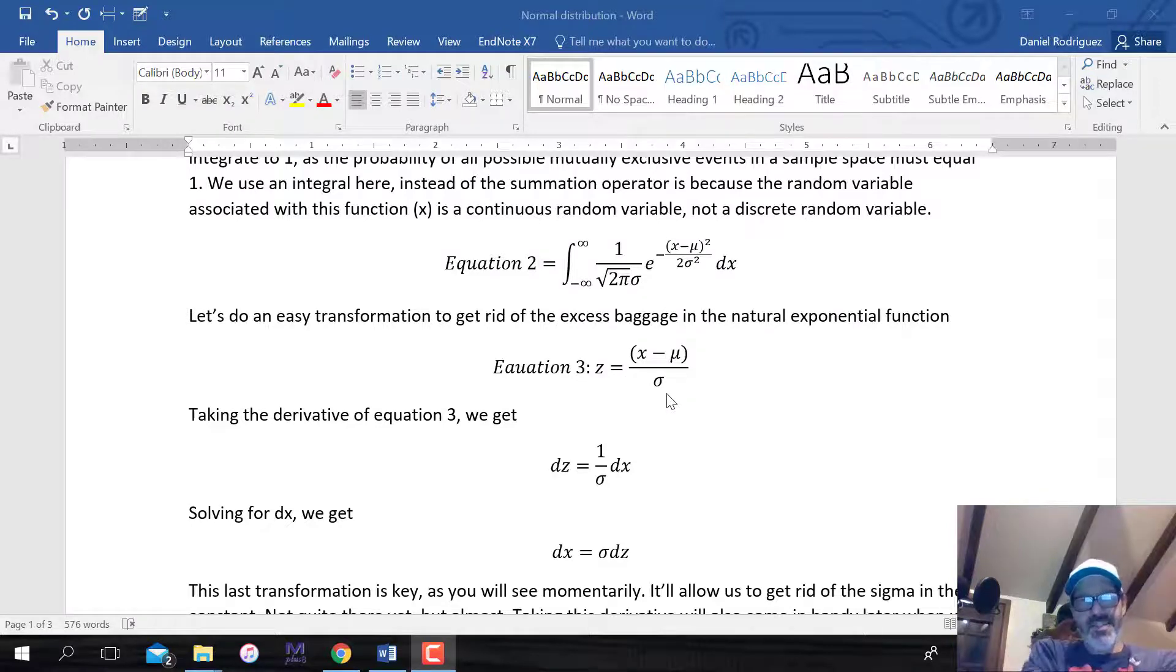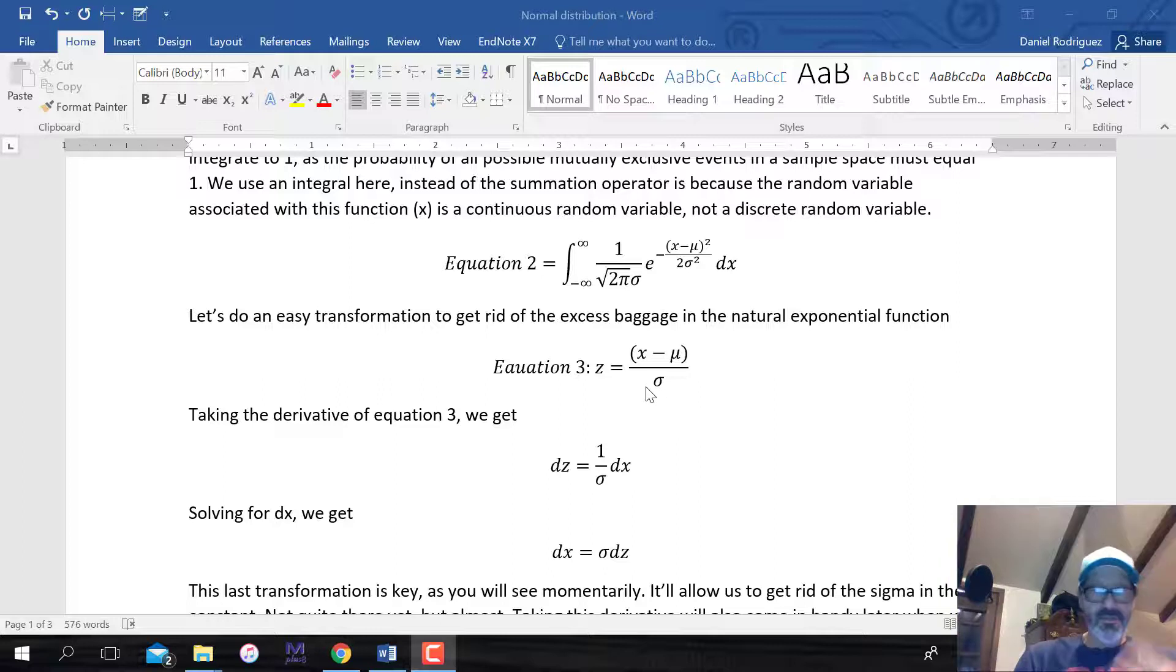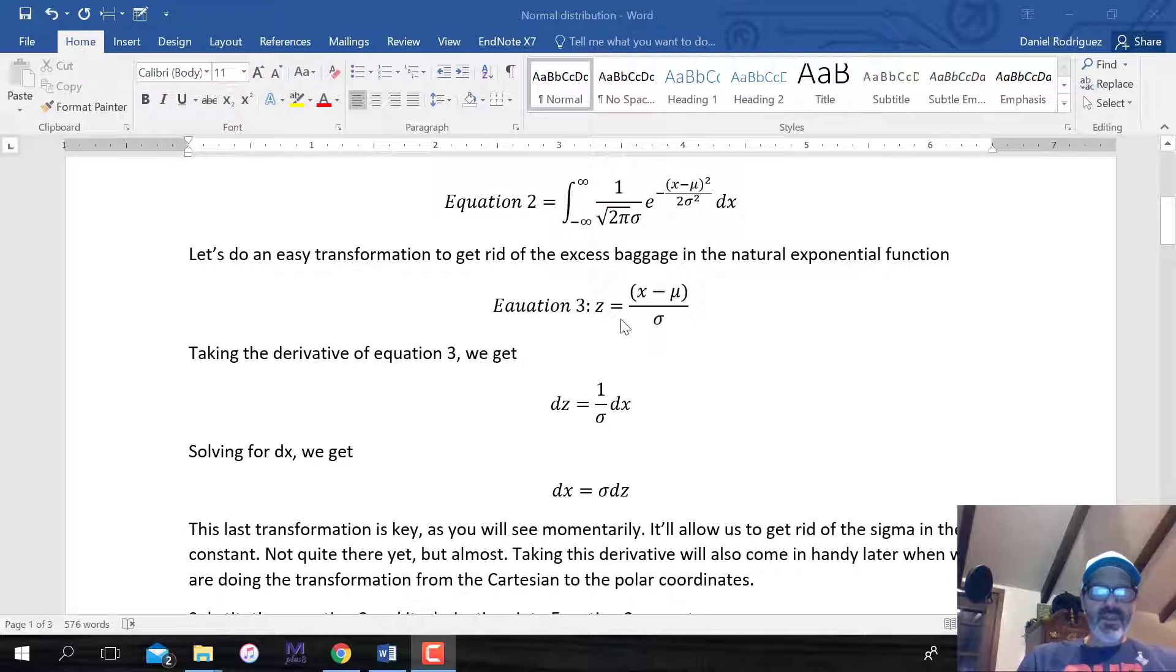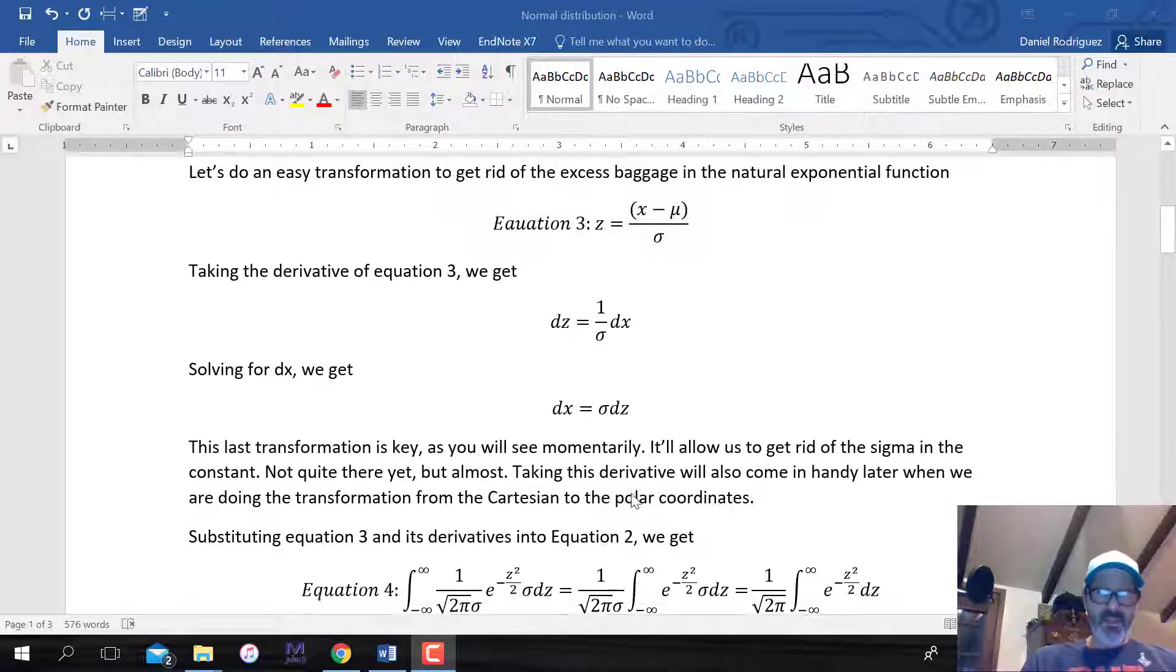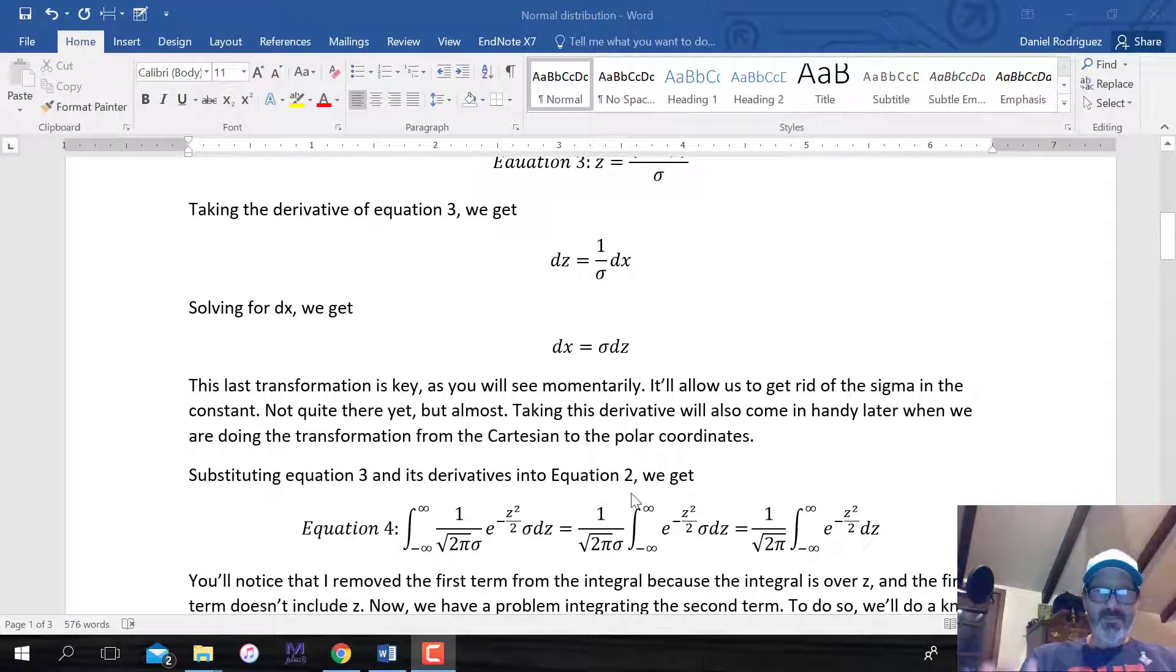We'll let z equal x minus mu divided by sigma. This is just your standardization equation. If you've taken stats 101 or intro stats, you know that z values are used in all kinds of statistical tests. Now we're converting from one coordinate system that has x to the z. We have to take the derivative of this because we have to get rid of this dx and replace it with a dz.